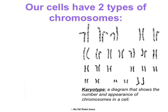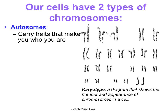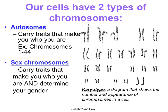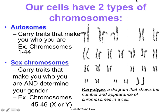Within your cells — both somatic and gametes — there are two types of chromosomes. There are autosomes, which carry the traits that just make you who you are. This is the first 44 chromosomes in humans. And then there are also sex chromosomes, which carry the traits that make you who you are and also specifically determine your gender. These are the last two chromosomes — they're either X or Y's. So this right here is a karyotype. It's just a diagram that shows the number and appearance of chromosomes in a cell. This is showing a human body cell, so it's a human somatic cell and it's diploid, meaning it has all of your DNA in it. So it has 46 total chromosomes — 23 came from your mom and 23 came from your dad. So we organize them in pairs.